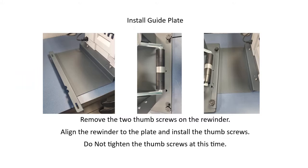To install the guide plate, remove the thumb screws on the rewinder. Align the rewinder to the plate and install the thumb screws. Do not tighten the thumb screws at this time.